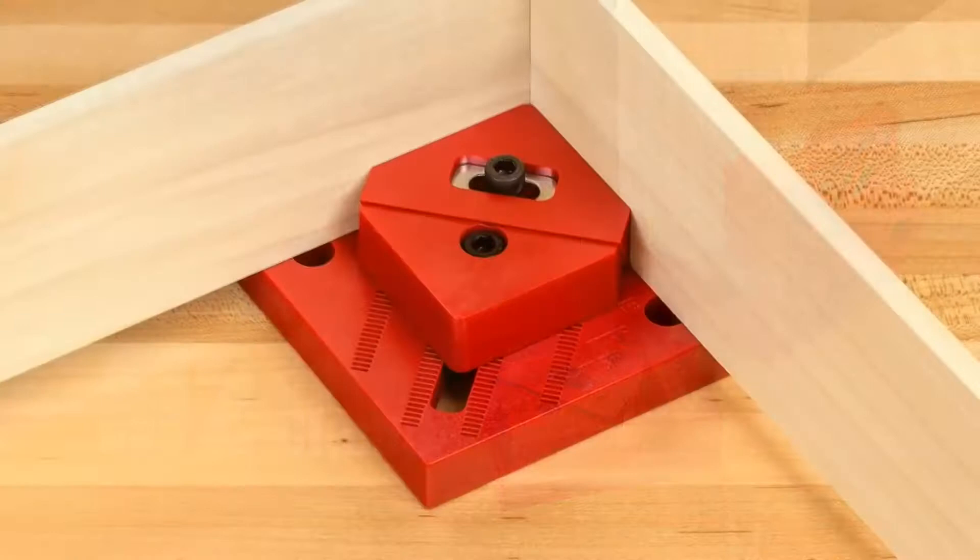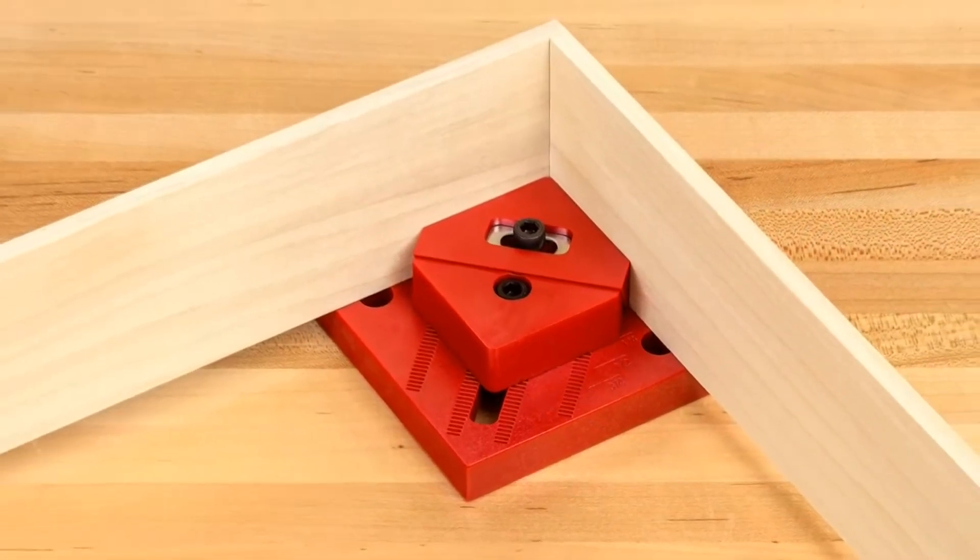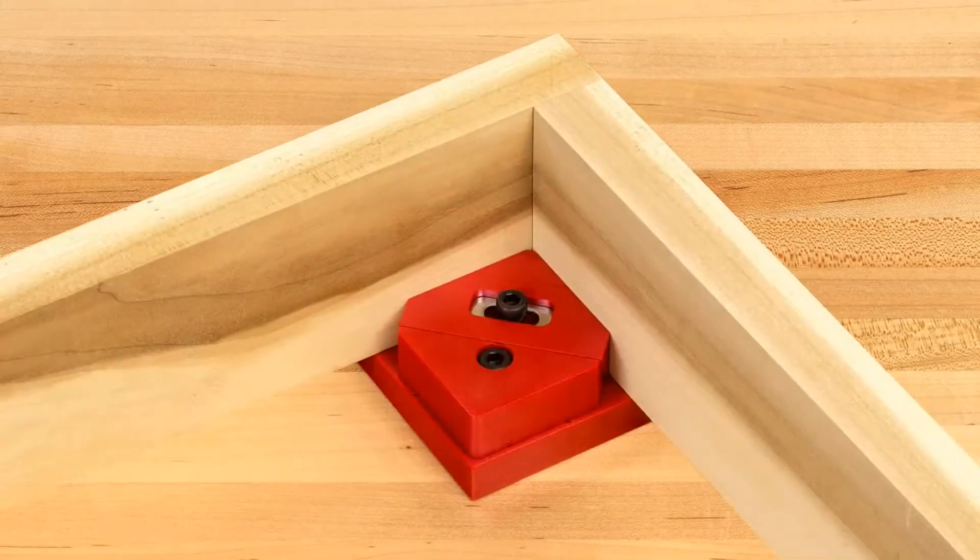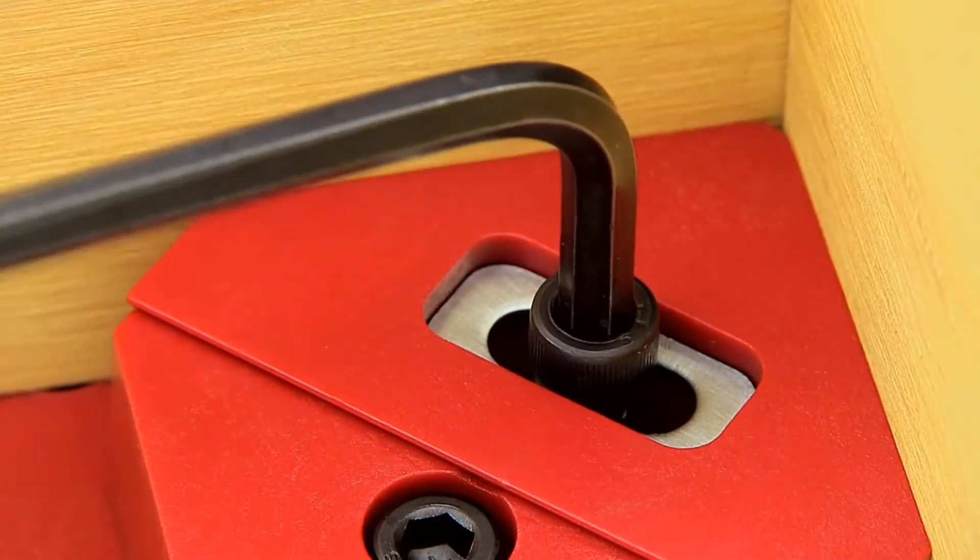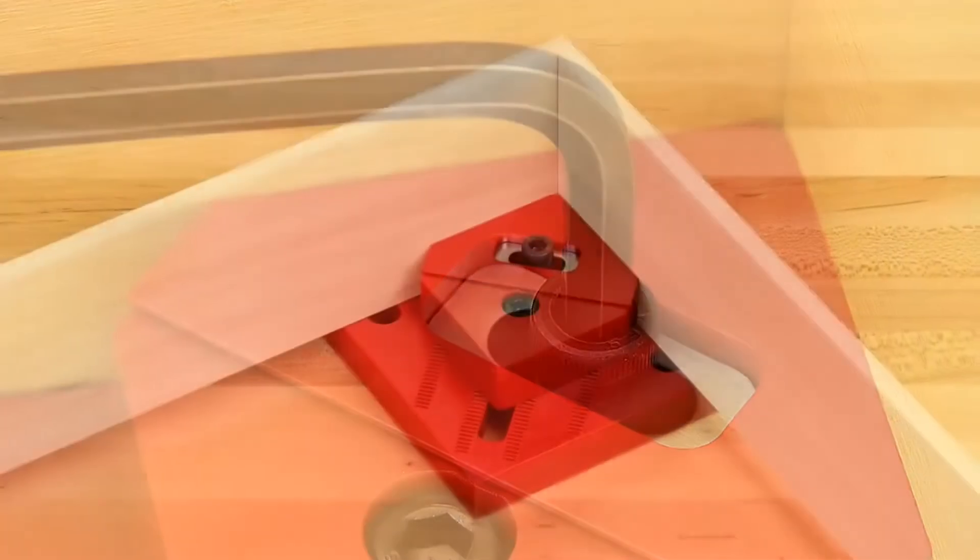They quickly adjust for use with material ranging in thickness from a quarter inch to a full one inch. With a twist of the knob or a turn of a hex key, depending on your clamping application, provides ample torque to tighten the clamp, square your stock, and secure the joint.